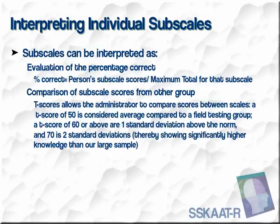In interpreting the overall scores, remember the SCAT-R is not a standardized test. It is an indication of what the individual knows and believes about sexuality, and assesses whether it changes over time and how it compares to other individuals of the same functioning level. Subscales can be interpreted as an evaluation of the percentage correct — the person's subscale score over the maximum total for that subscale. You can also do a comparison of the subscale scores from another group. T-scores allow the administrator to compare scores between scales.